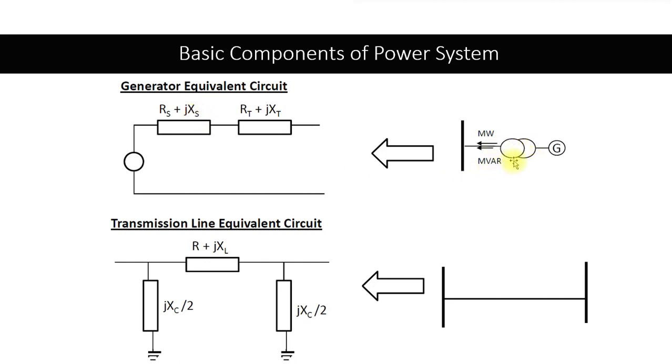Similarly, the transformer is the same thing. You have a step-up side, you have a step-down side, and on both sides, what do you have? You have wire wound around the core. When you have a wire, when you have a conductor, this conductor will have some resistance and some reactance.